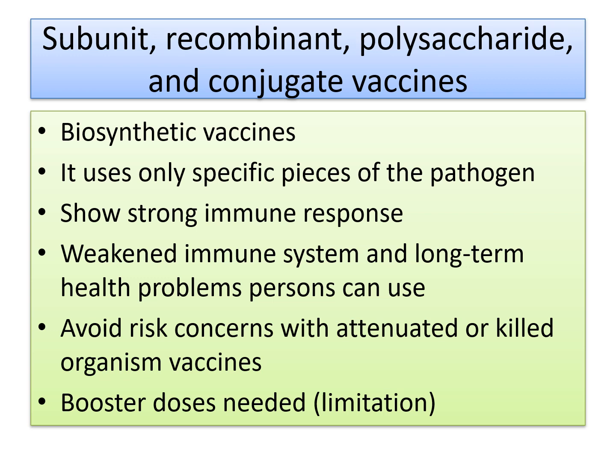The next type is subunit, recombinant, polysaccharide, and conjugate vaccines — these are all biosynthetic vaccines. They use only specific pieces of the pathogen and show a very strong immune response. They are suitable for people with weakened immune systems and long-term health problems — for example, HIV patients whose immune systems are not strong enough. They also avoid the risk concerns associated with attenuated or killed organism vaccines. The only limitation is that booster doses are needed for long-term immunity.